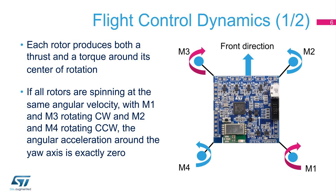Considering we are looking at the drone from the top, we can see its front direction, as in the picture. M1 and M3 motors rotate in clockwise mode, whereas M2 and M4 rotate in counter-clockwise mode. When all four motors rotate with the same angular velocity, the drone moves in the Z direction and its angular respect to yaw remains zero, so there is no need for a tail rotor as with conventional helicopters.